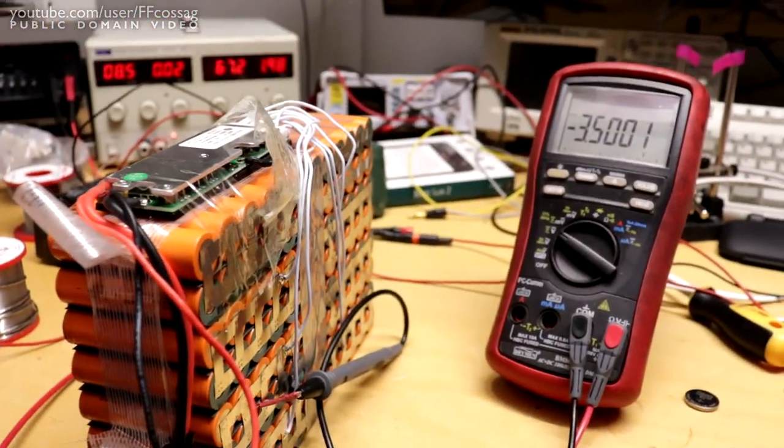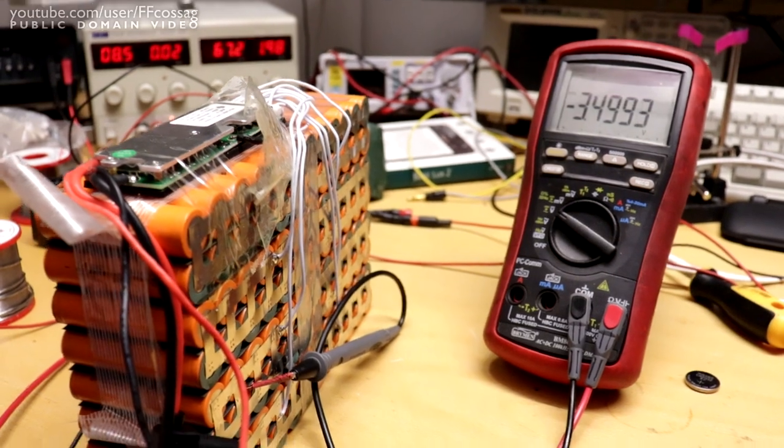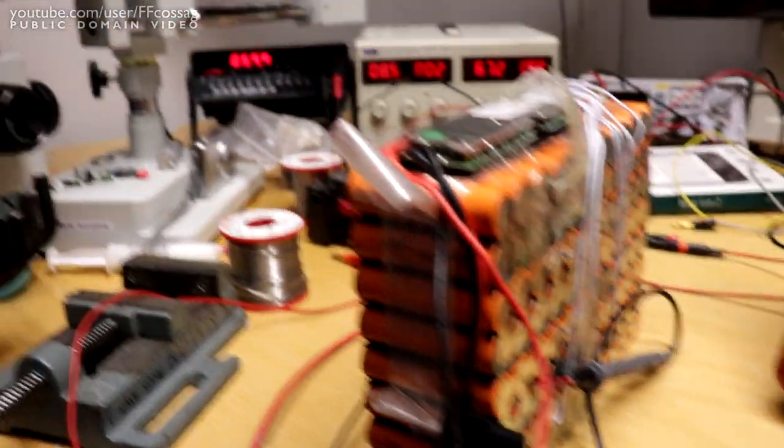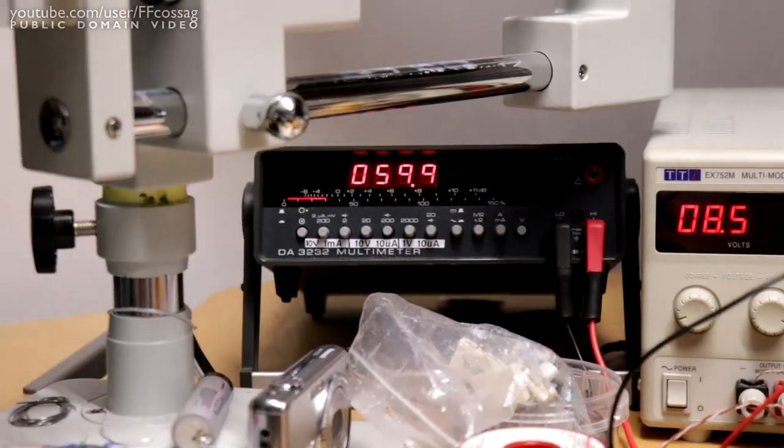The other cells, they have higher voltages. I'd say they're about 3.7 volts right now, probably. A total pack voltage of 59.9.